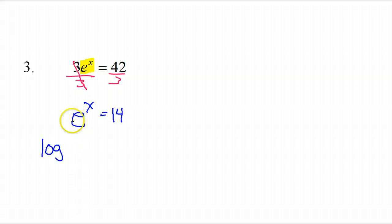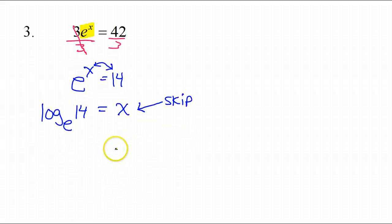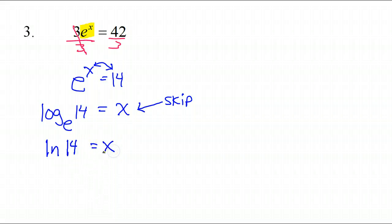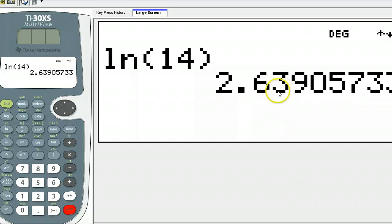For log form, we have base e, so that would be log base e. These two are going to change sides: so that's 14 over here and the x goes over there. Feel free to skip the intermediate step — log base e is the natural log, so we just put natural log 14 is equal to x. We can put that straight into our calculator: natural log 14, rounding to two decimal places, is 2.64.